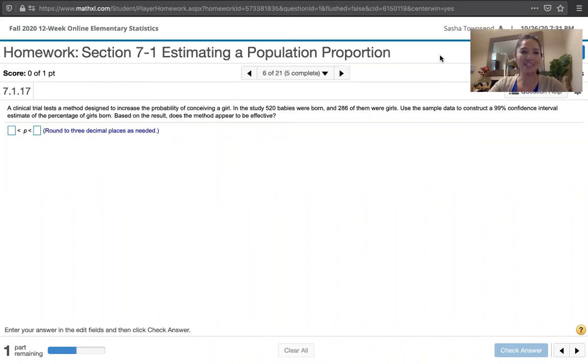The problem statement says a clinical trial tests a method designed to increase the probability of conceiving a girl. In the study, 520 babies were born and 286 of them were girls. Use the sample data to construct a 99% confidence interval estimate of the percentage of girls born. Based on the result, does the method appear to be effective?